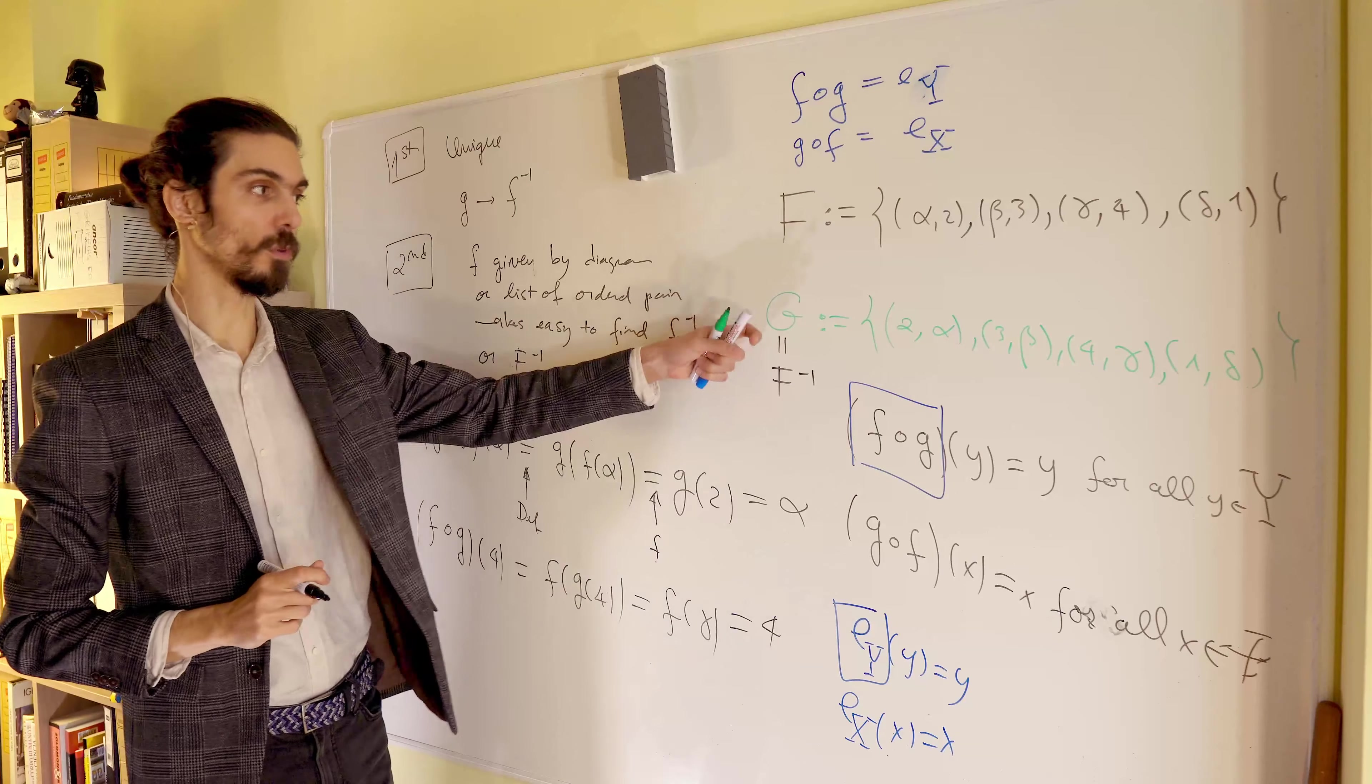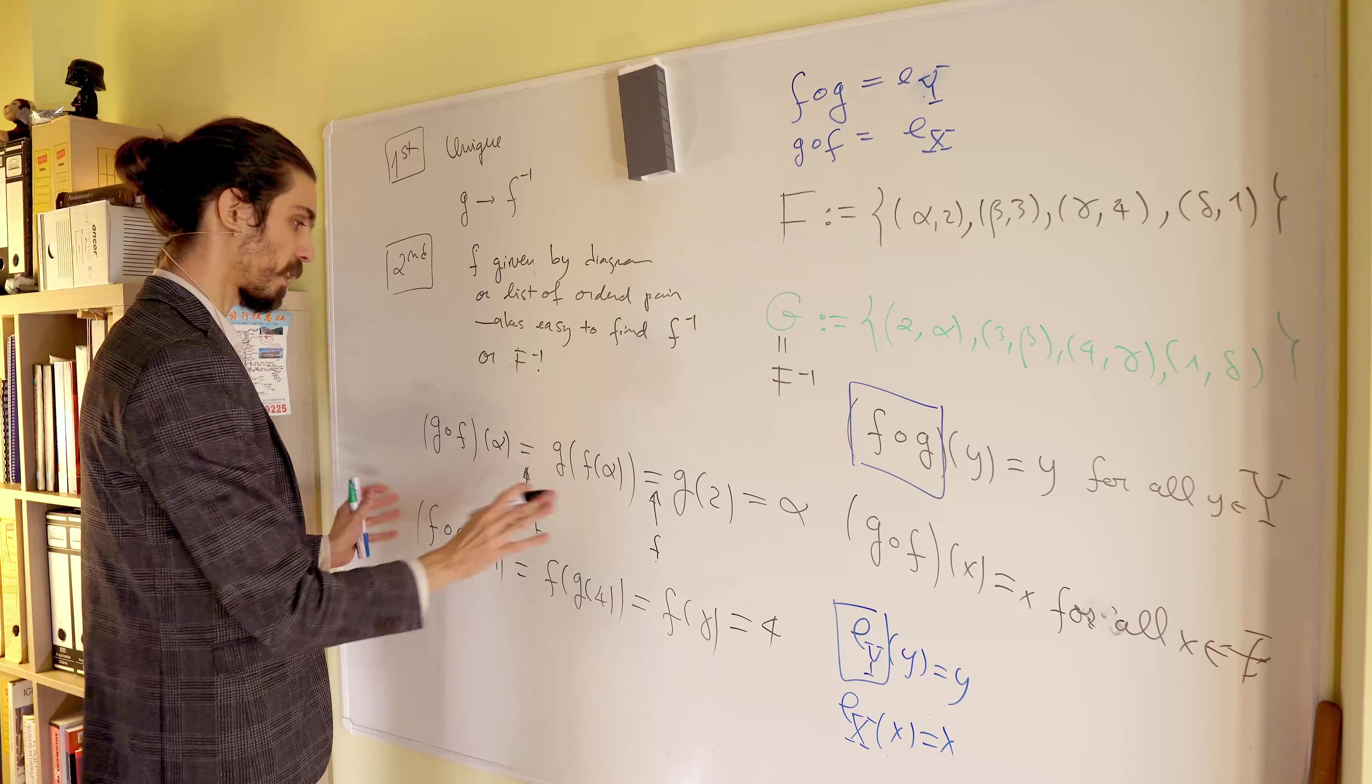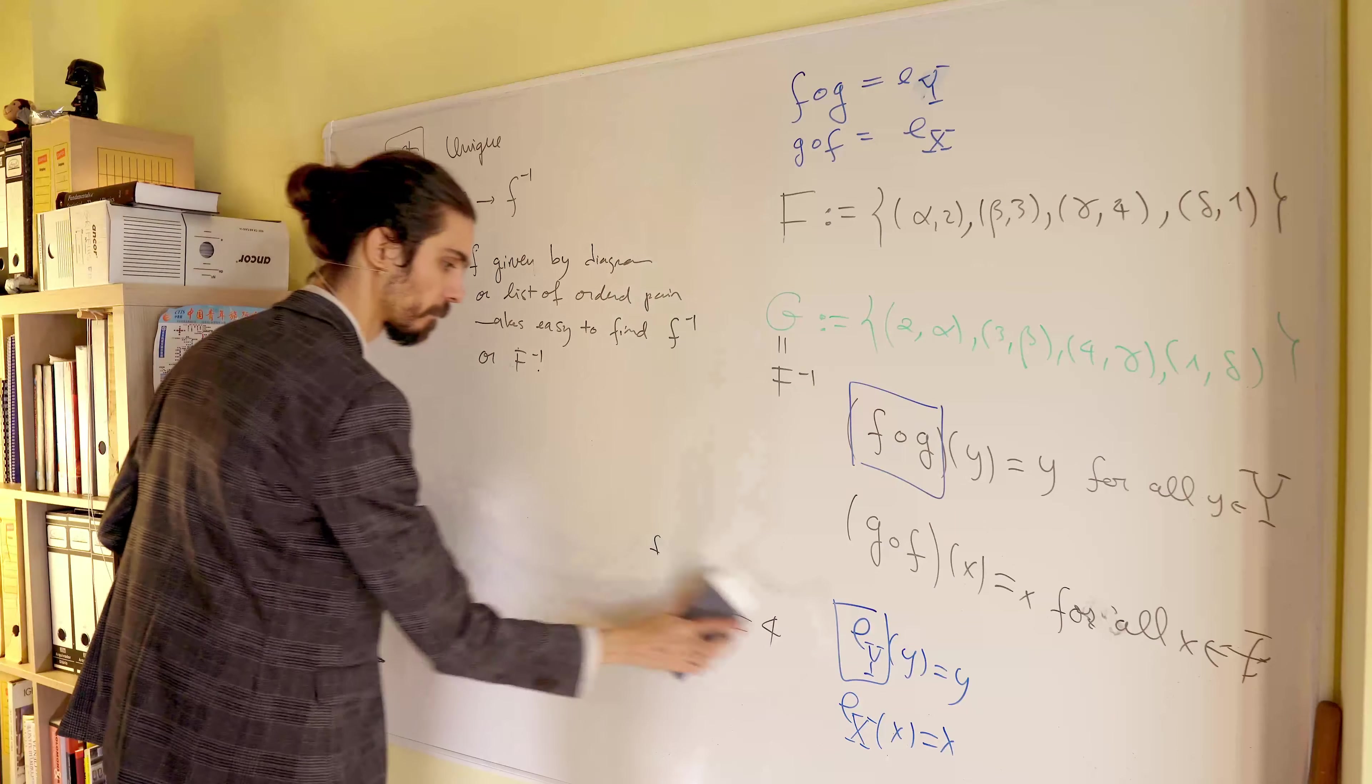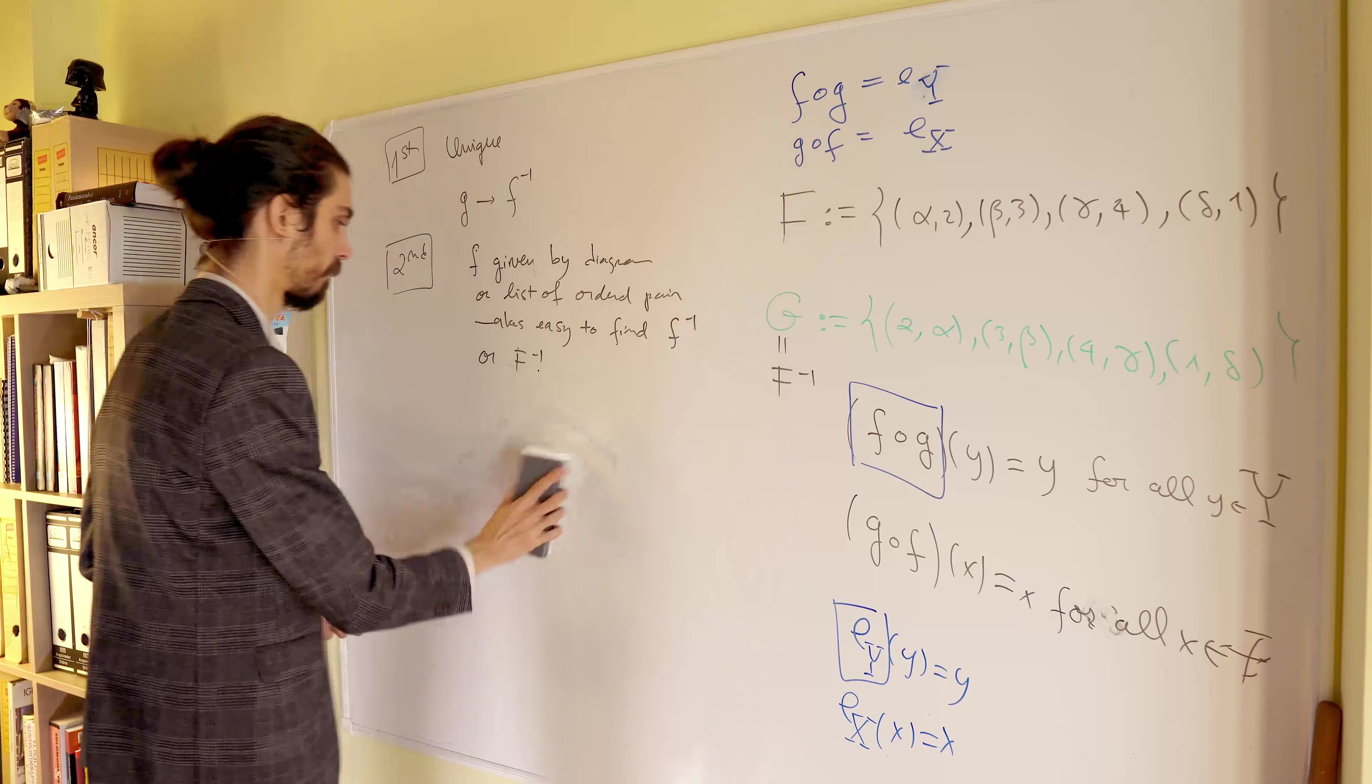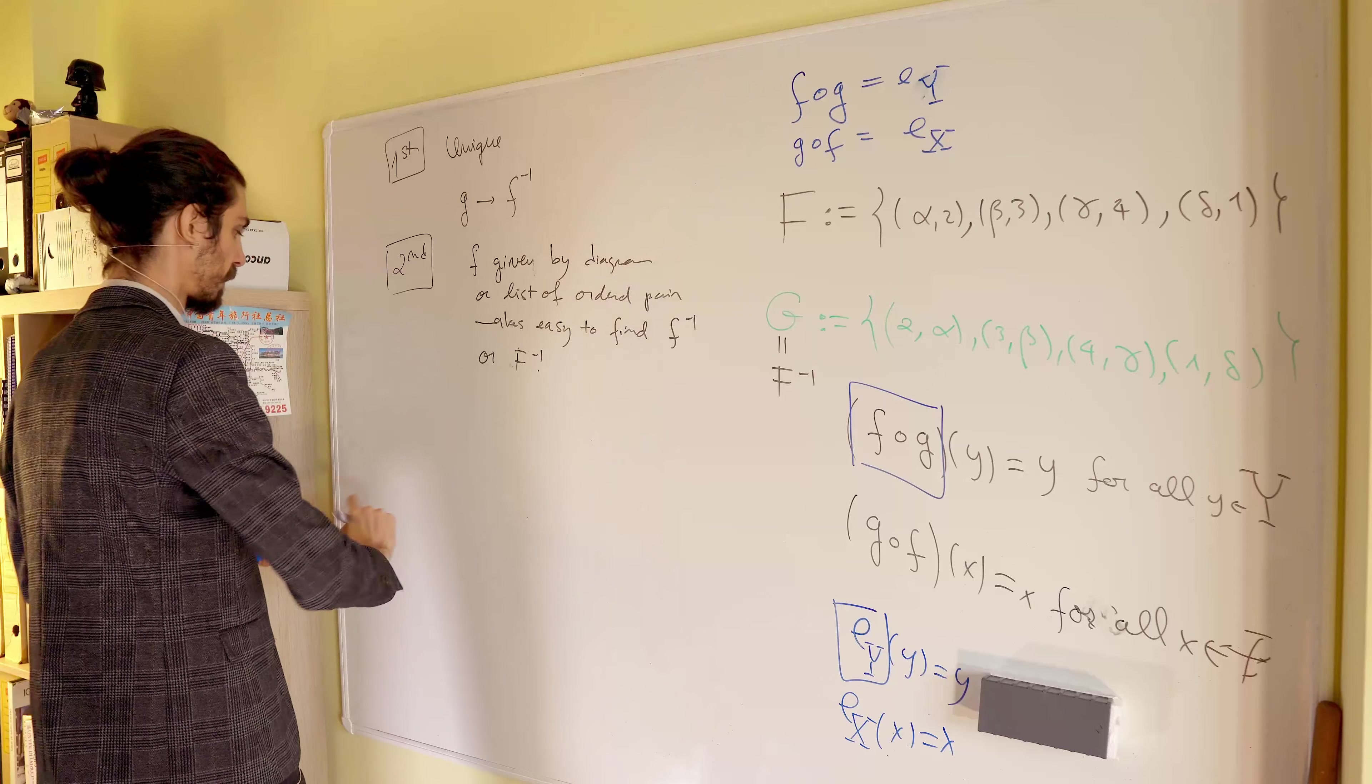So, this thing is big f minus 1, the inverse under this point of view, the relation point of view, okay? So, so far, so good. Let's make more observations regarding this thing. The third one, the third observation,